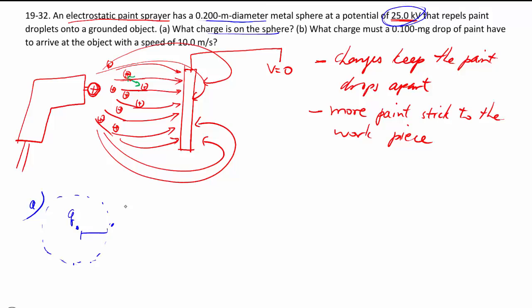Then at the surface, which is 0.1 meters away from the center—again, this is diameter, not radius—we can work out the V as I've given you, which is KQ over R.